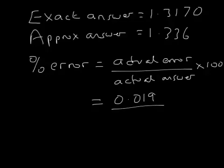That's easy to remember. And then the only thing is, do you divide by the actual answer or the approximate answer? It's the actual answer. So you divide by 1.317 times 100 and you get the percentage error, which works out to be 1.44%.